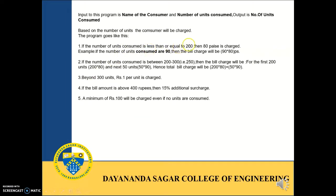The various conditions are: if the number of units consumed is less than or equal to 200, then an amount of 80 paisa per unit is charged. For example, if the number of units consumed are 90, then the bill charged will be 90 into 80 paisa. The next condition is if the number of units consumed is in between 200 to 300.